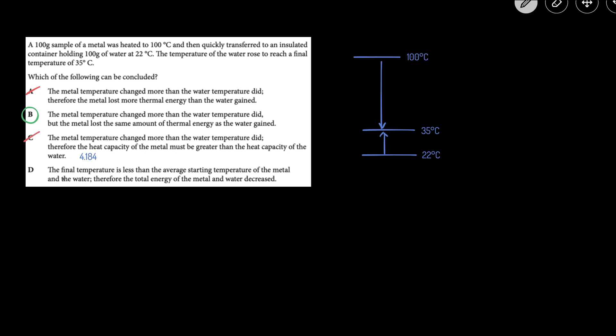And then D: the final temperature is less than the average starting temperature of the metal and the water. That's true. Therefore, the total energy of the metal and the water has decreased. That's incorrect because the total amount of energy in an insulated system should net zero because the amount of heat gained has to equal the amount of heat lost.